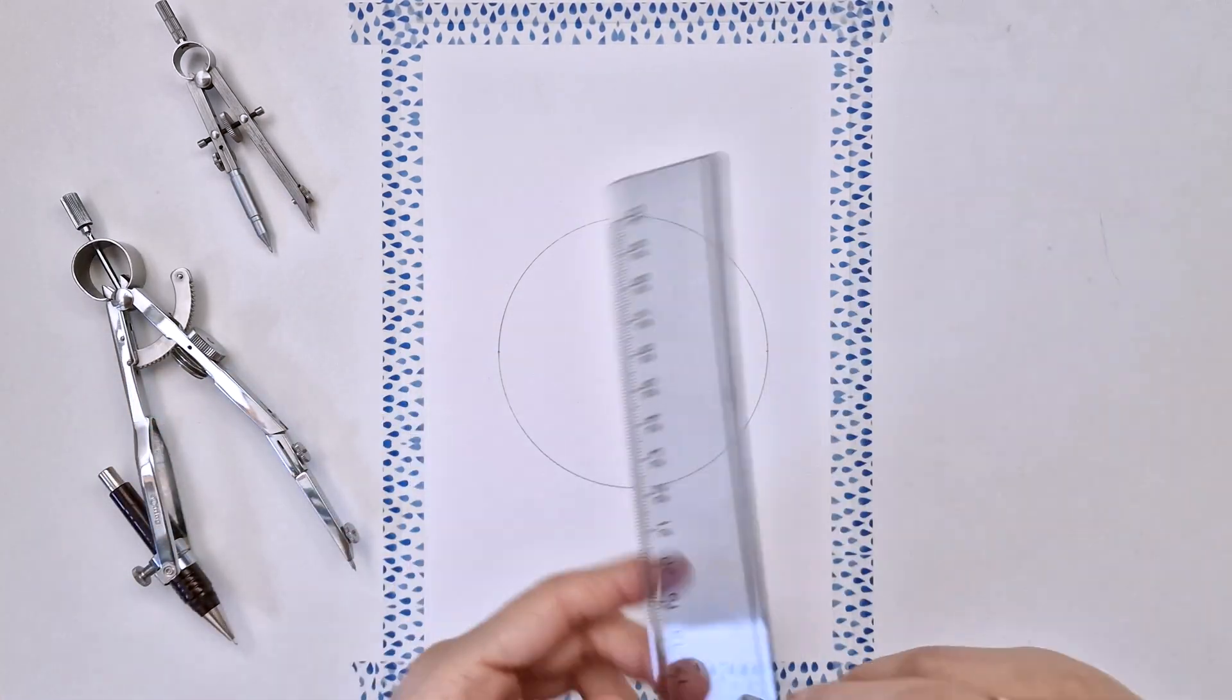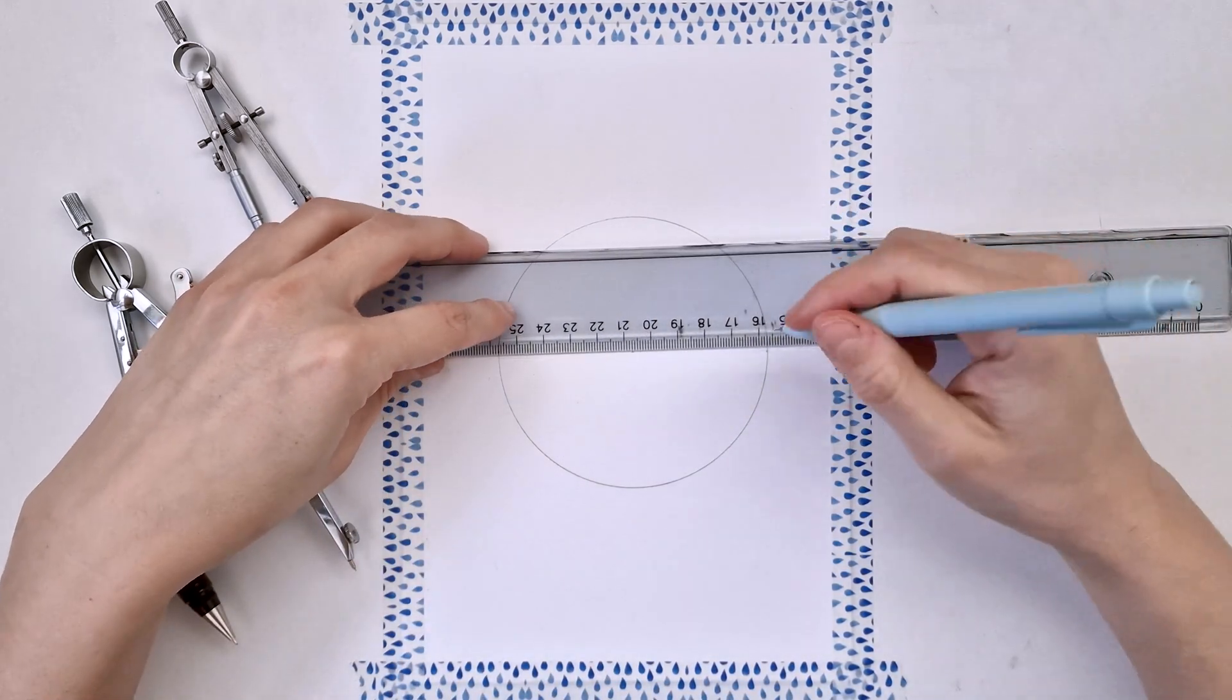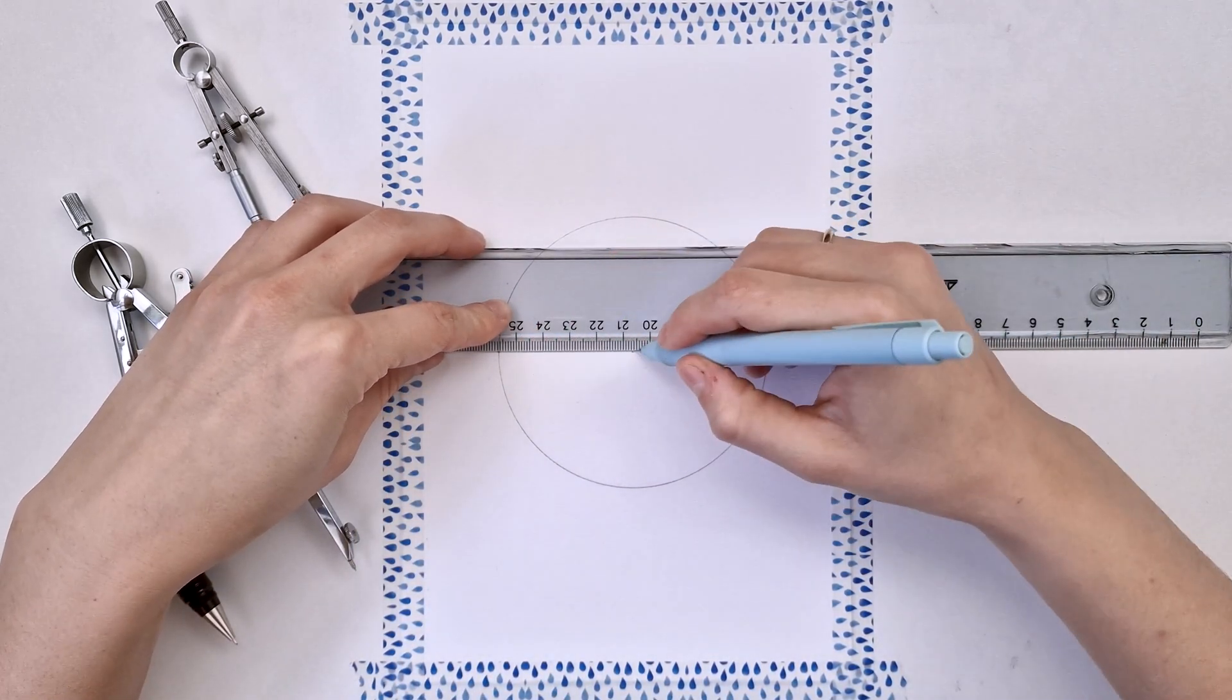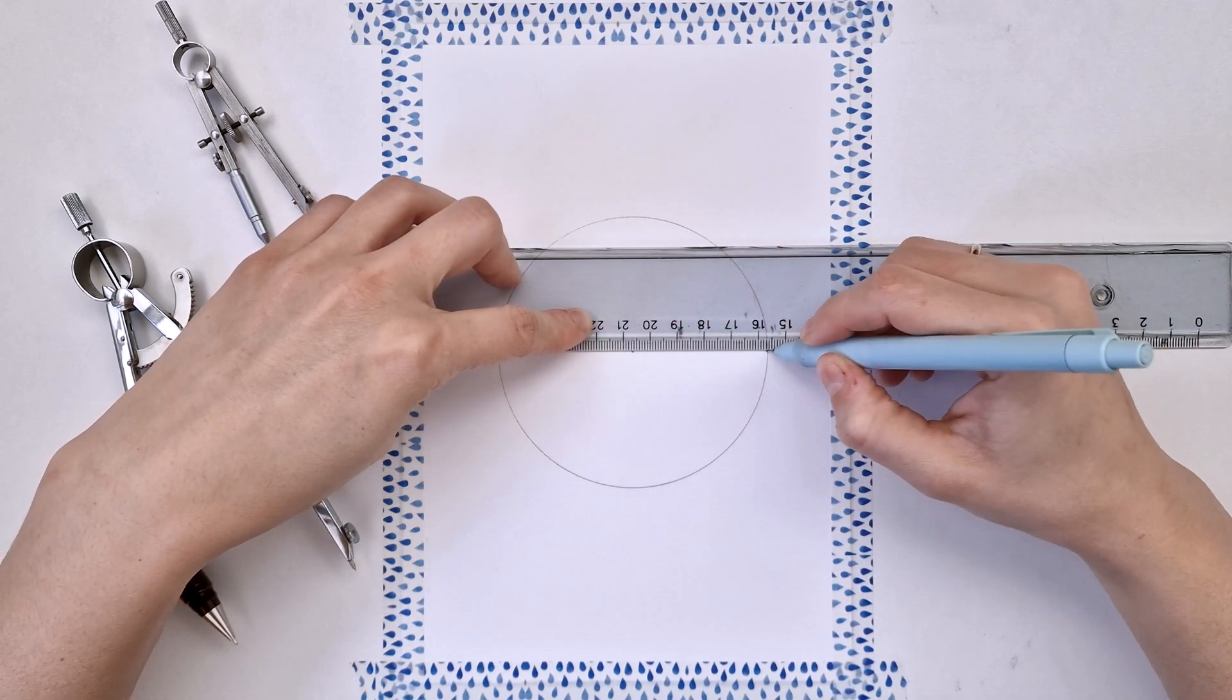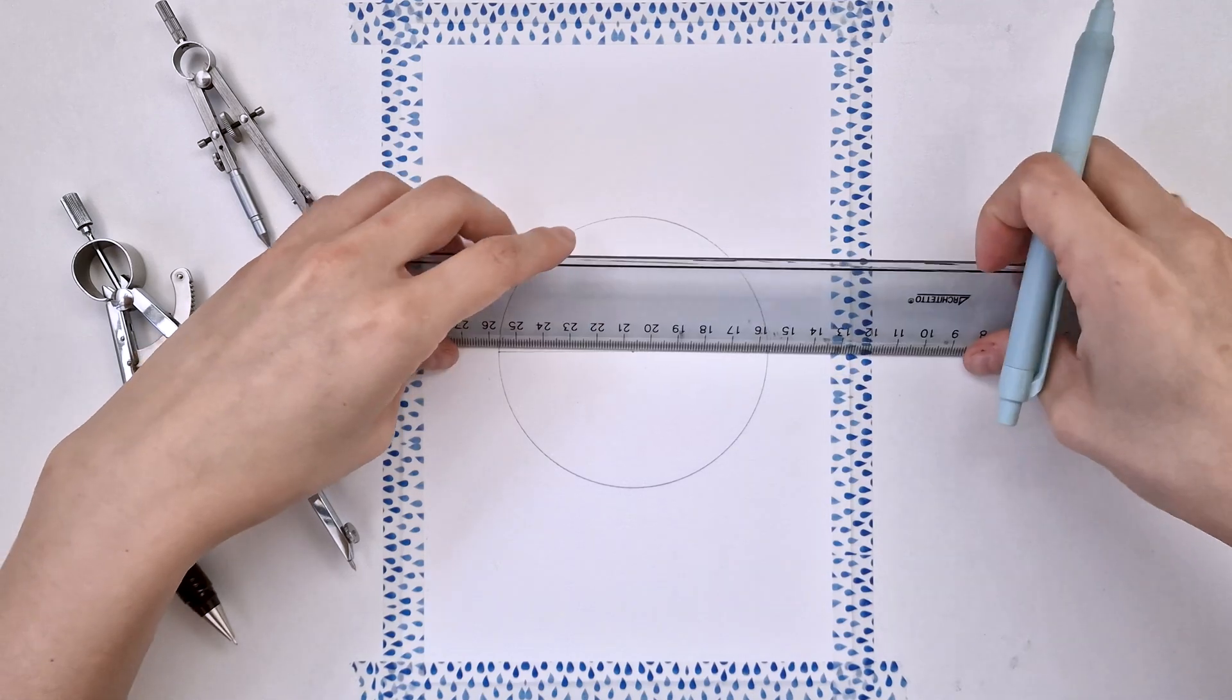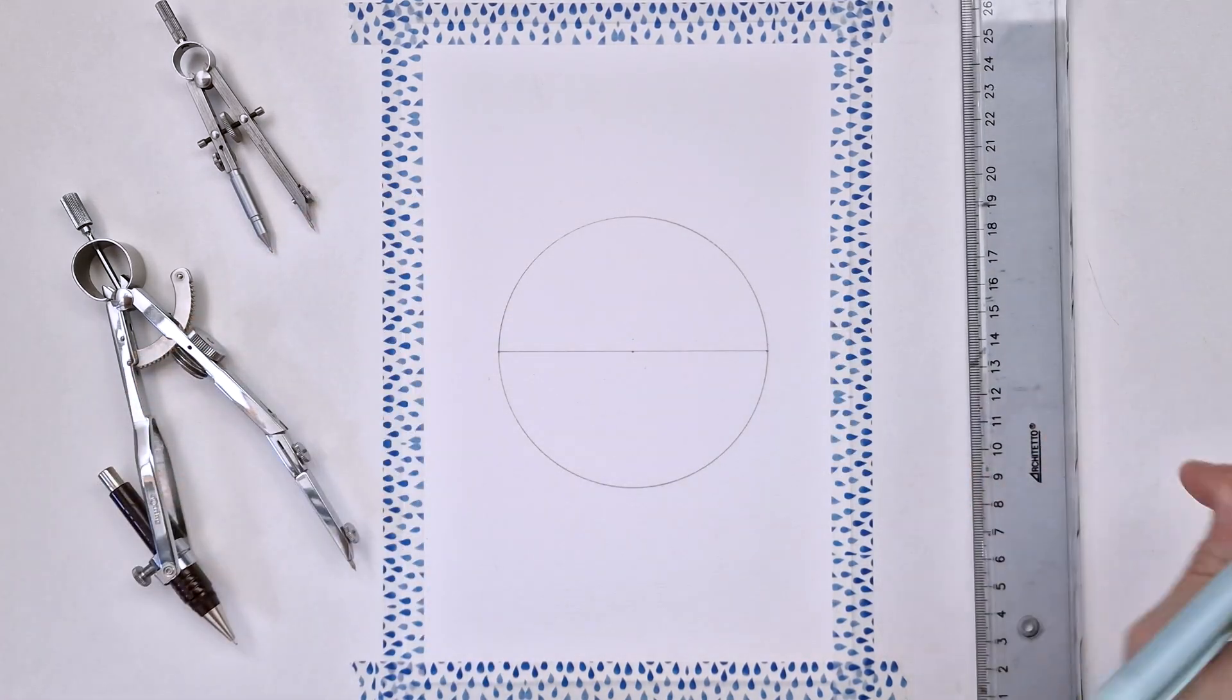Then I'm drawing the horizontal line. As always, you can measure the distance from the edges of the paper, you can eyeball it, whatever works for you. Just make sure that your horizontal line passes through the center of the circle.